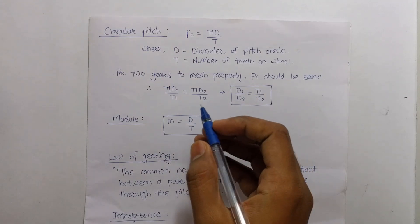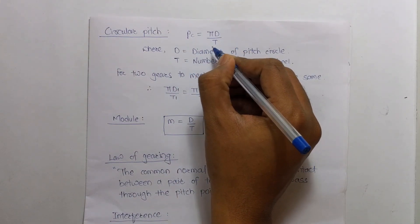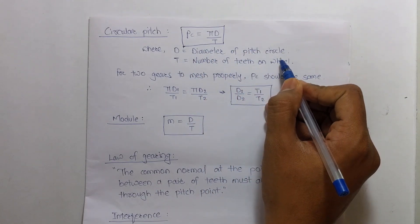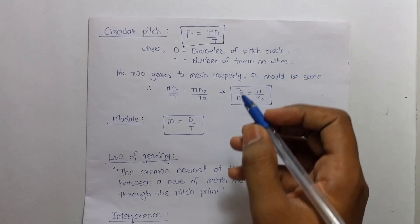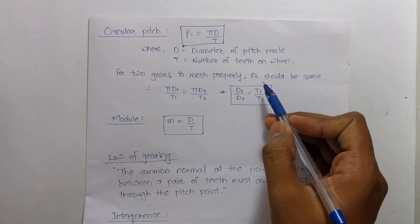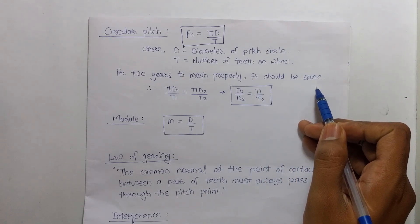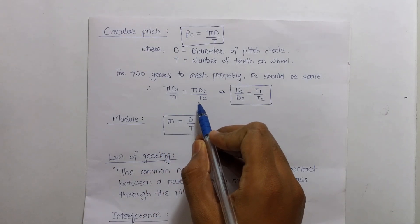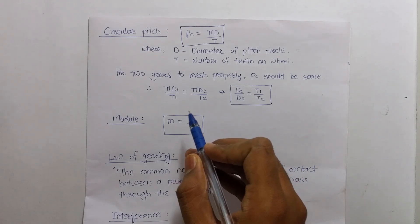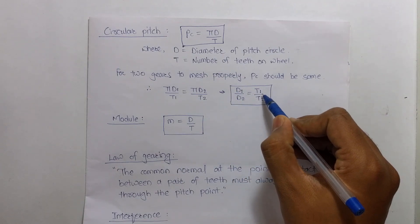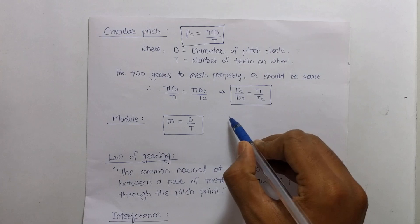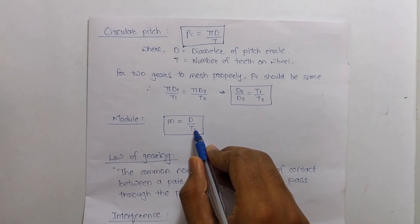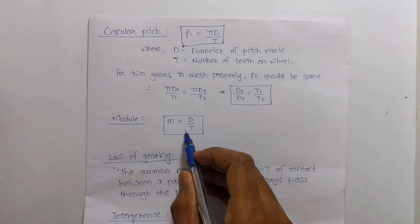Circular pitch is denoted by pc = πd/t, where d is the pitch circle diameter and t is the number of teeth. For two gears to mesh properly, the circular pitch must be equal on both gears: πd₁/t₁ = πd₂/t₂, giving d₁/d₂ = t₁/t₂. Module m is defined as the pitch circle diameter divided by number of teeth: m = d/t.